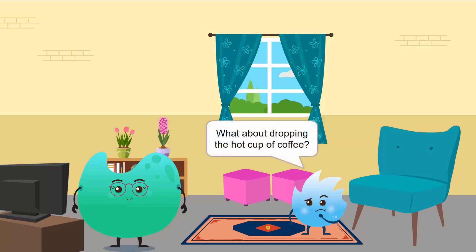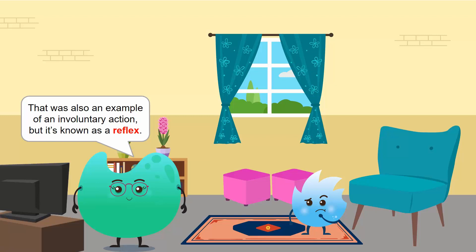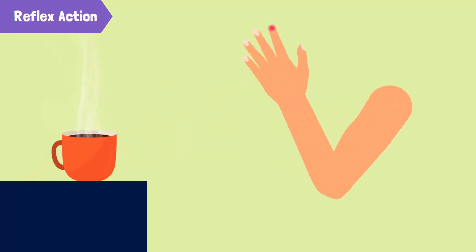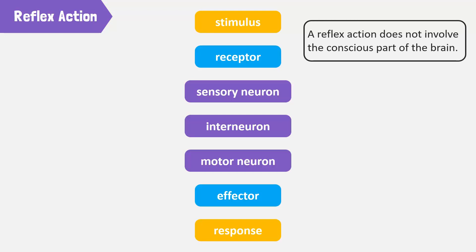What about dropping the hot cup of coffee? That was also an example of an involuntary action, but it's known as a reflex. A reflex action is an involuntary and rapid response to a stimulus. This happens in order to minimize damage to the body from potentially harmful conditions — for example, moving your hand away instantly from a hot object. A reflex action follows a general sequence and does not involve the conscious part of the brain. This is why the response is so fast. The receptors in the body detect a stimulus. A sensory neuron sends electrical impulses to an interneuron, which is located in the spinal cord of the central nervous system.